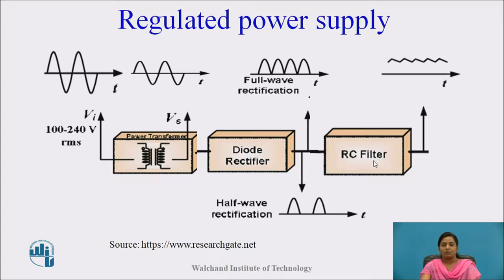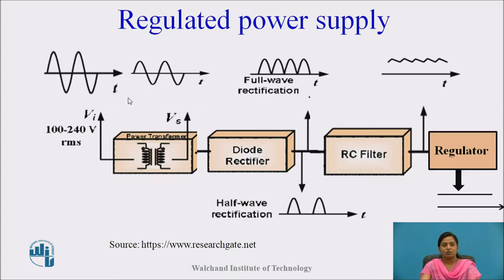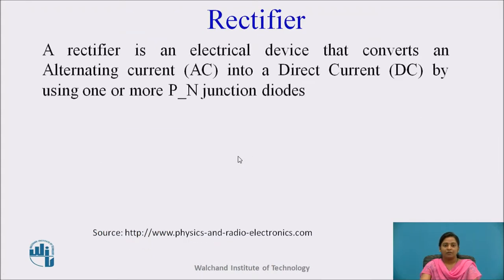After the filter circuit, a cleaner output is obtained. The next block is the regulator. In a regulated power supply, there may be variation in the input AC signal due to variations in AC mains or change in temperature. The regulator maintains the output constant even if there is a change in input variation. A rectifier is an electrical device that converts alternating current into direct current by using one or more p-n junction diodes.